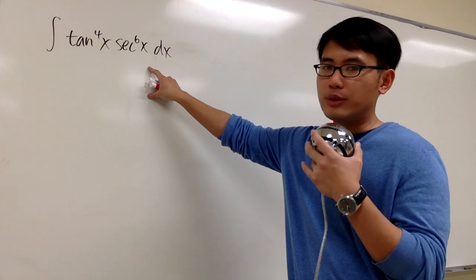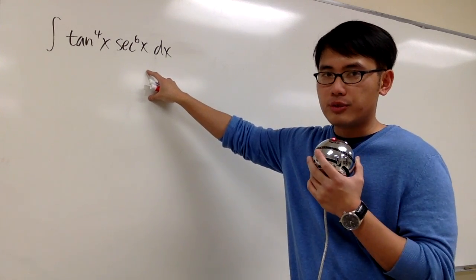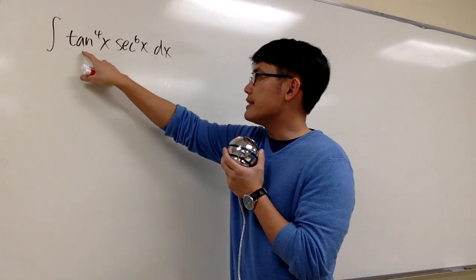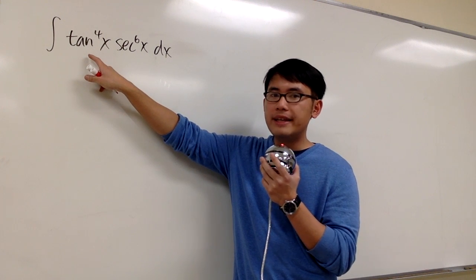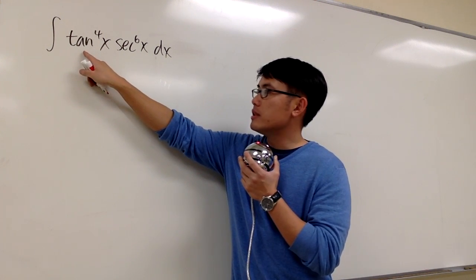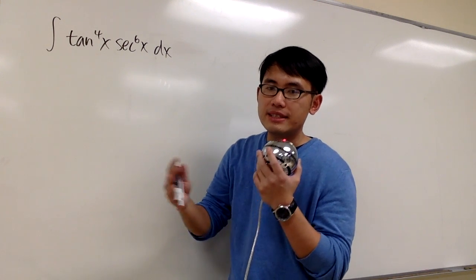Ideally, we have to somehow try to cancel things out or try to use substitution. The idea is that if you let u, if you want to use a u substitution, letting u equal to tangent, then in that case, you better have a secant squared somewhere.